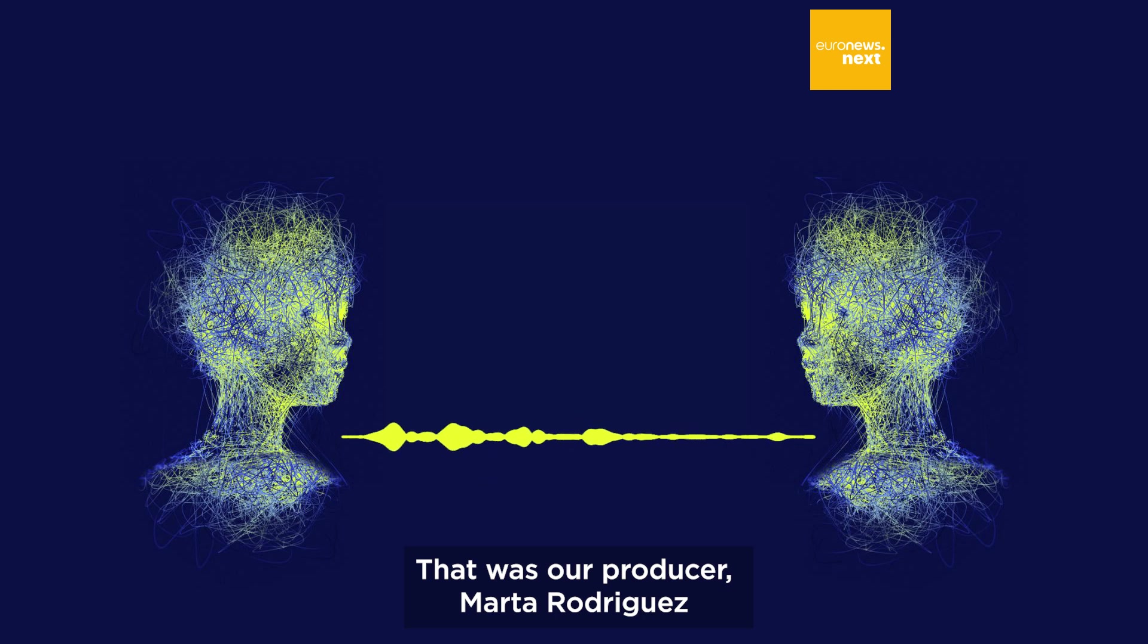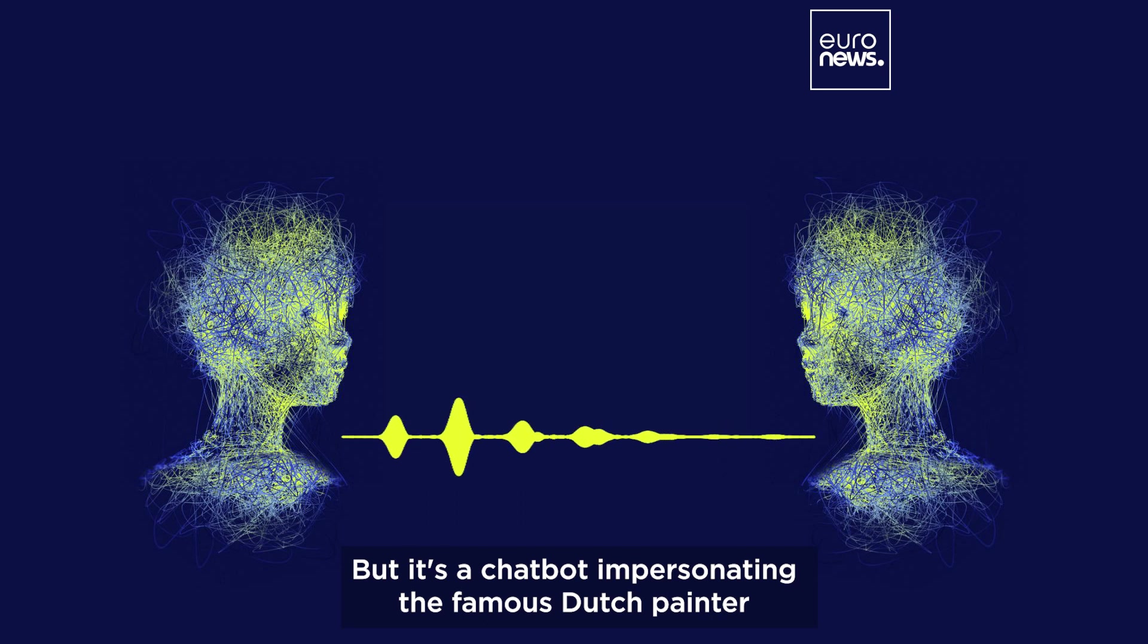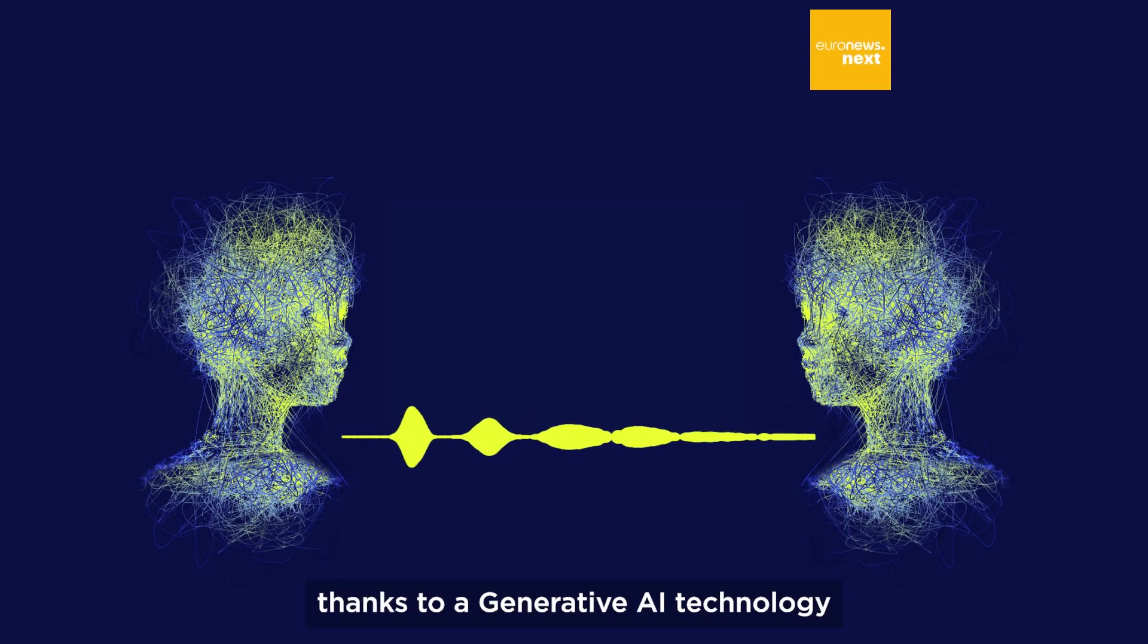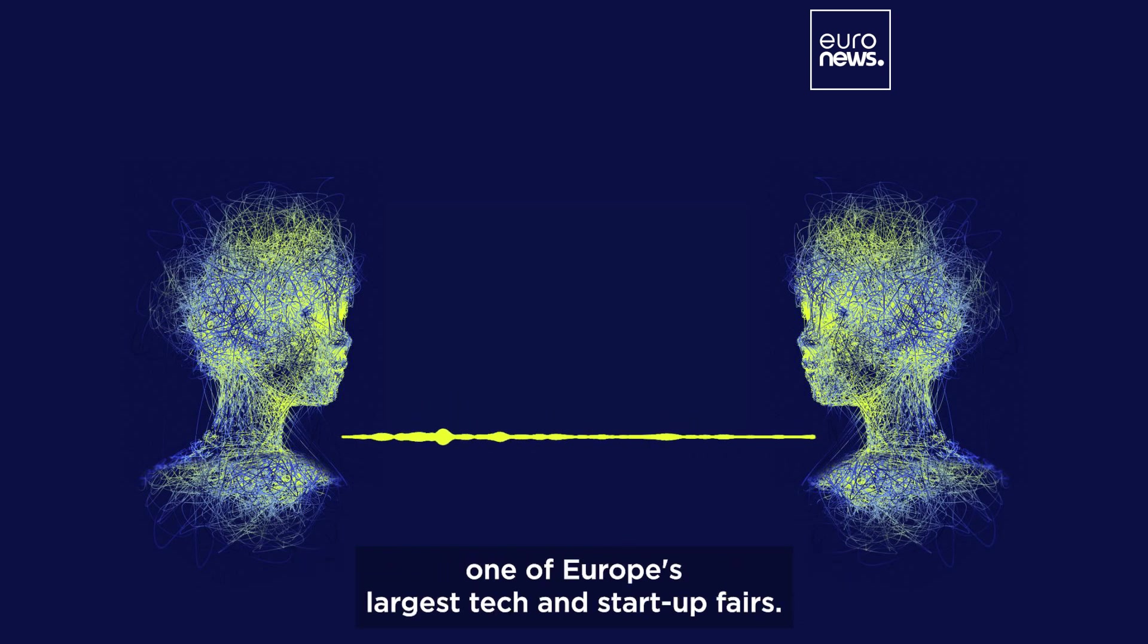That was our producer Marta Rodriguez in conversation with the painter Vincent van Gogh. Well, obviously not the real van Gogh - he died in 1890. But it's a chatbot impersonating the famous Dutch painter thanks to a generative AI technology that's similar to ChatGPT. Marta and the AI van Gogh met in Paris during VivaTech, one of Europe's largest tech and startup fairs.